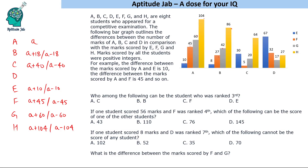To verify, if you compare C and E, the difference is 30 — which is consistent with C being A+40 and E being A+10 (difference of 30). C and F have a difference of 5, and C and G have a difference of 20, and C and H a difference of 64. These all confirm C = A+40.